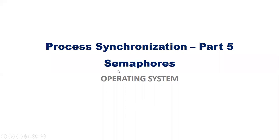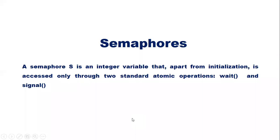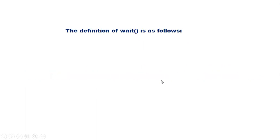In this video, let us discuss about a synchronization tool called semaphores. Semaphores are variables that are used to signal the status of shared resources to processes. A semaphore S is an integer variable that, apart from initialization, is accessed only through two standard atomic operations: wait and signal. The definition of wait is as follows.